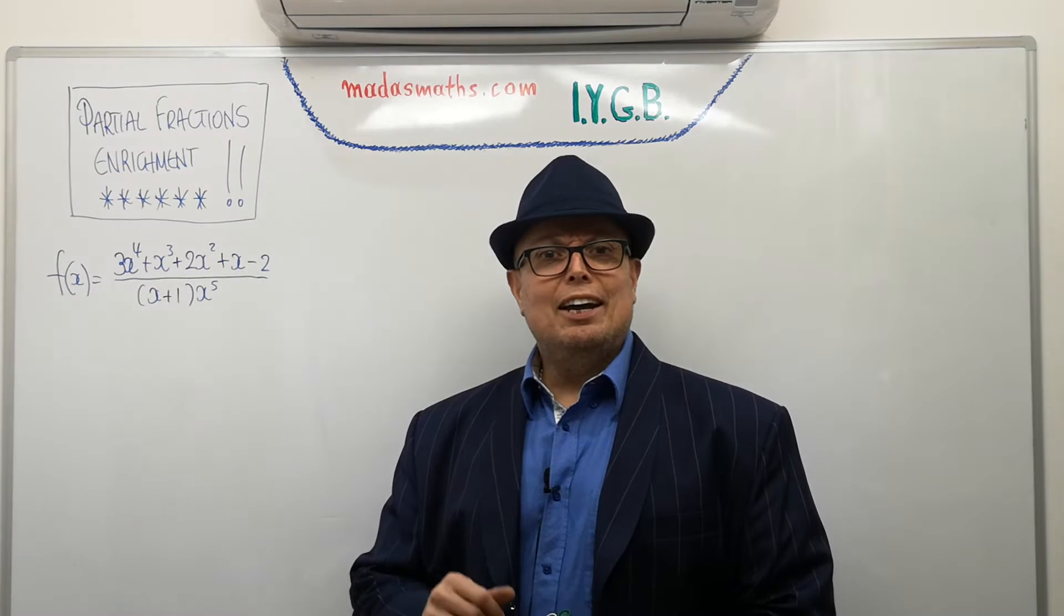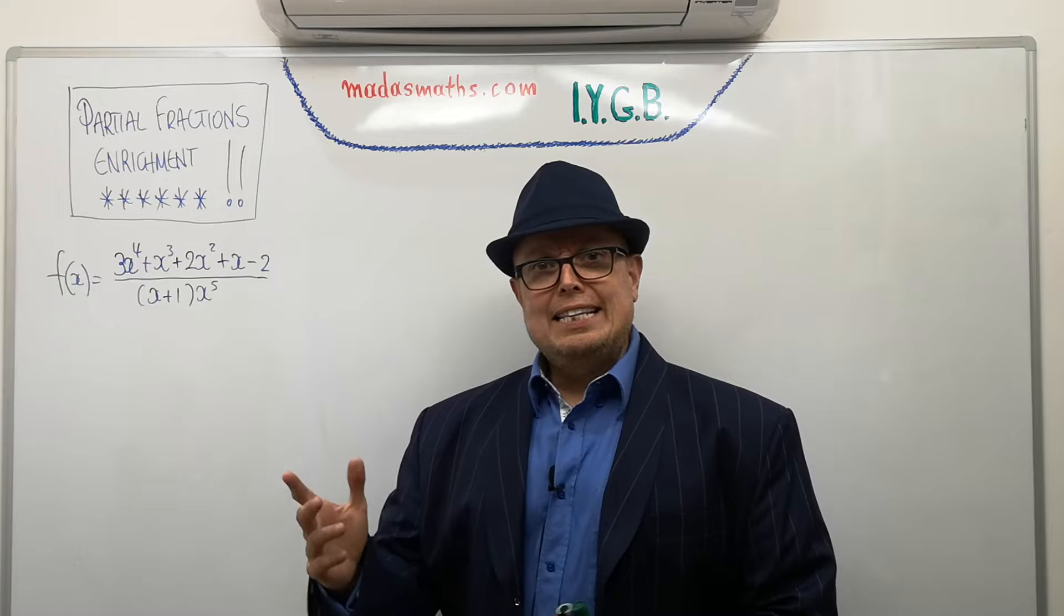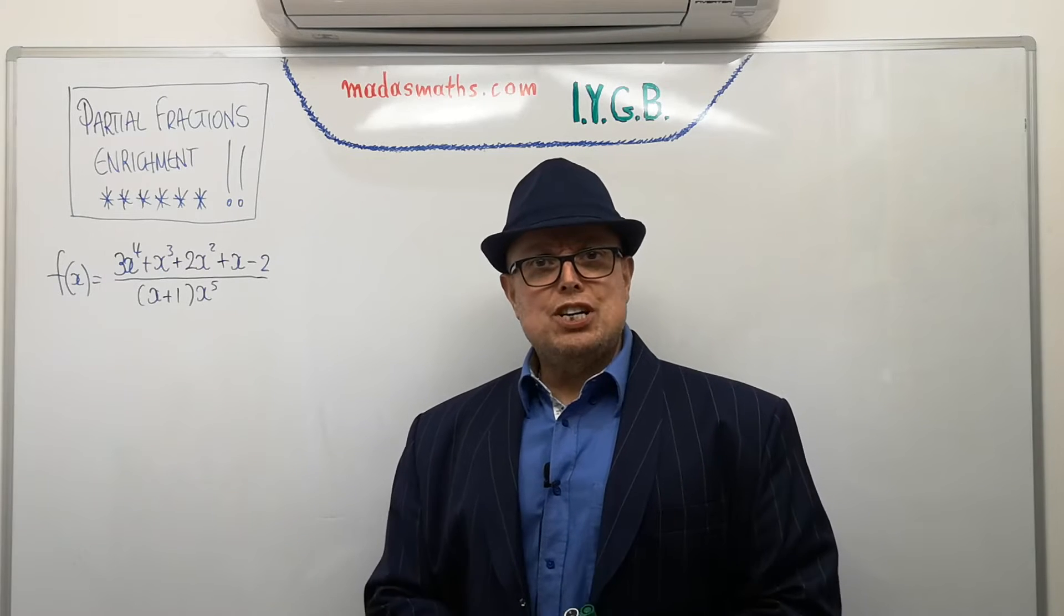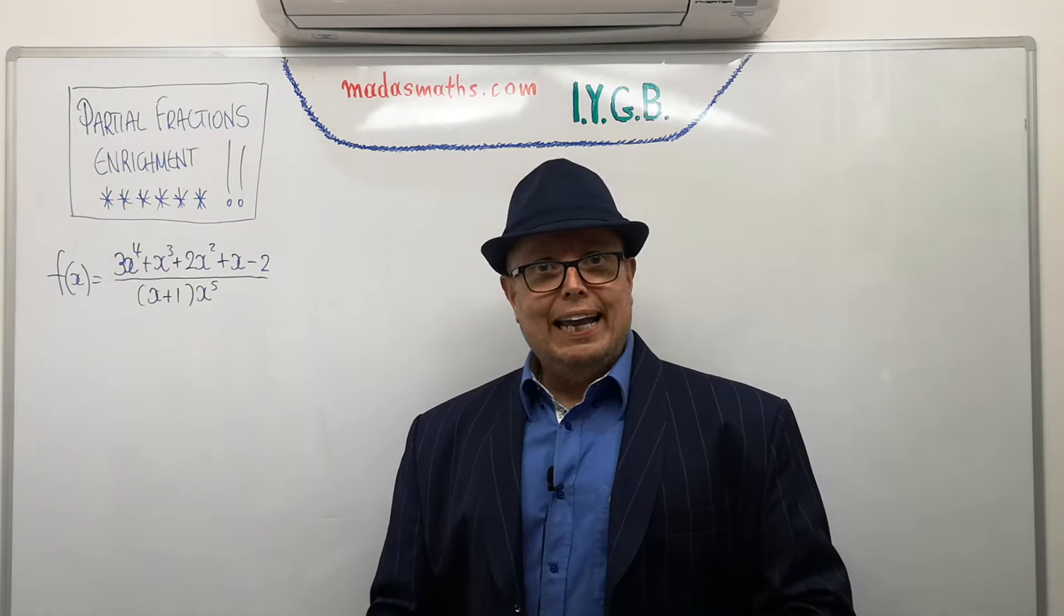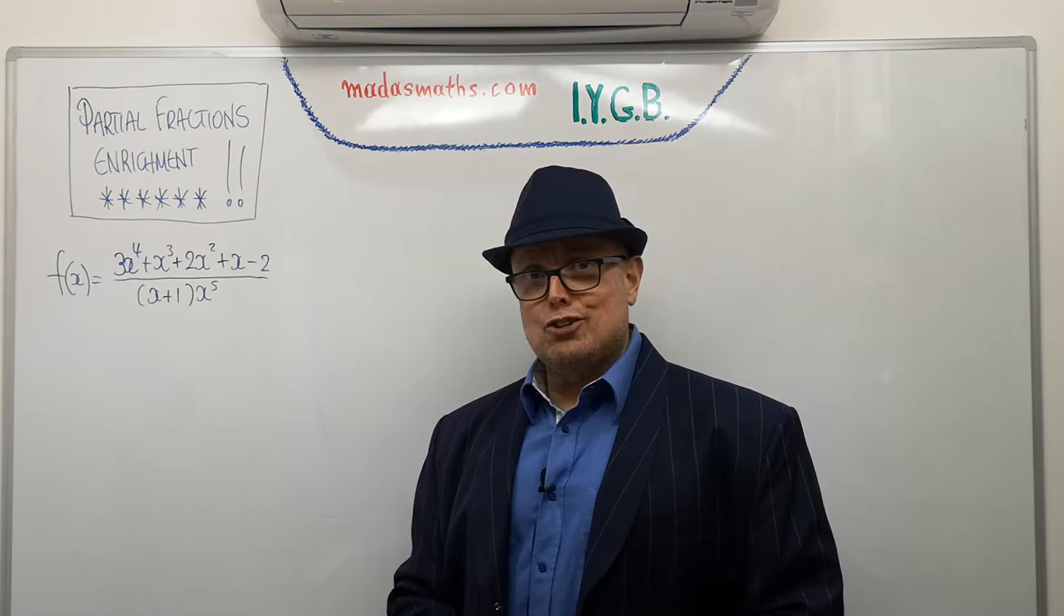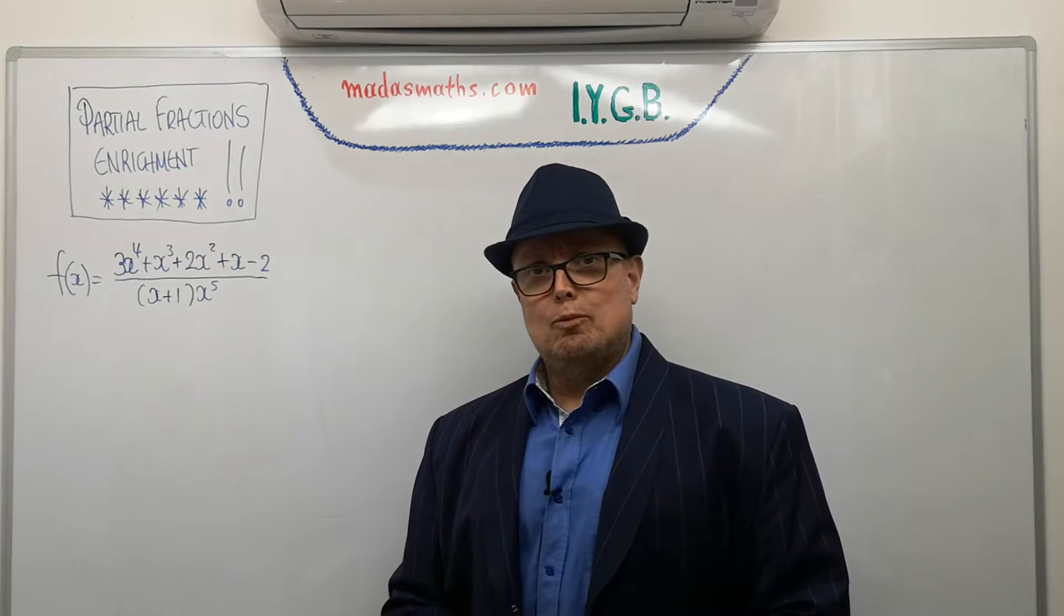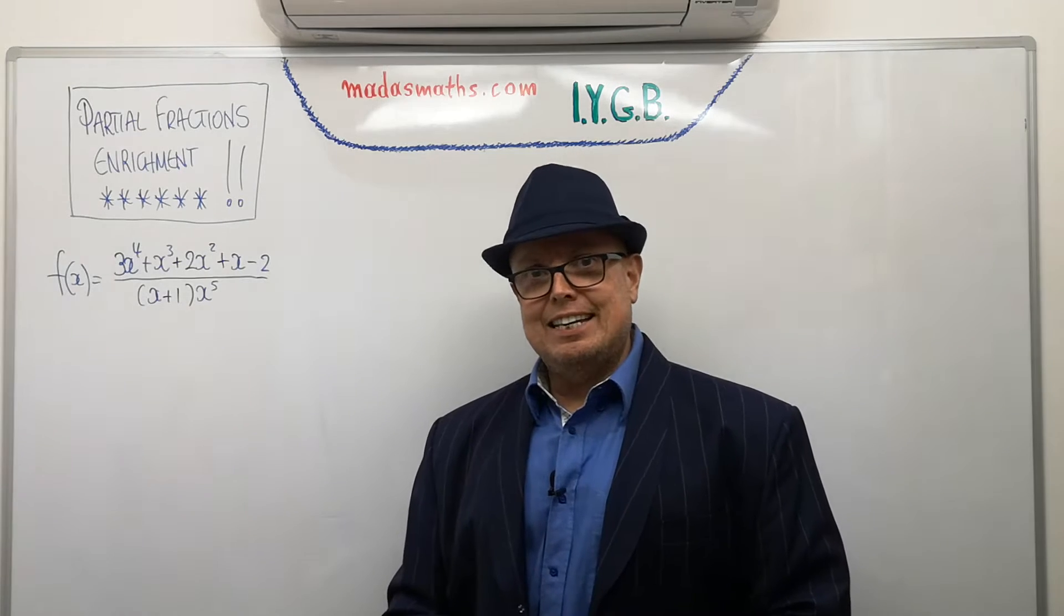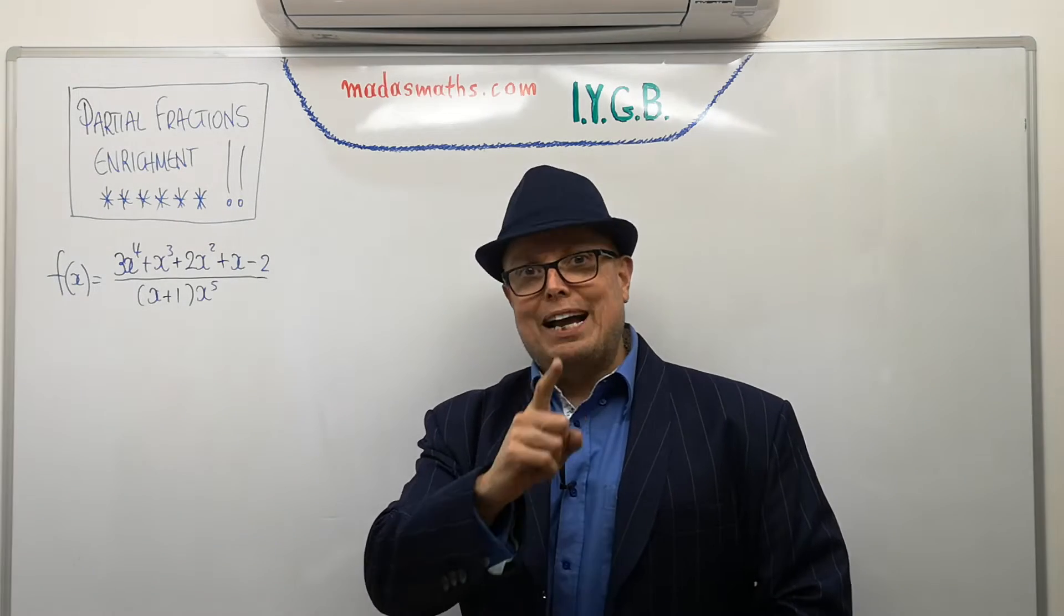Hello. I was walking down the street the other day and a clown jumps out the bushes. He puts a gun to my head and he says, express this into partial fractions or I'll kill you. What do I do? I look at him straight in the face and I said, you're picking on the wrong man.